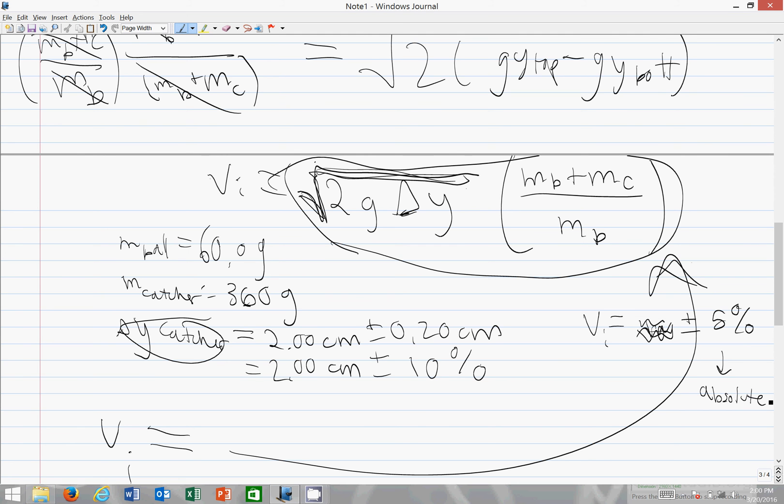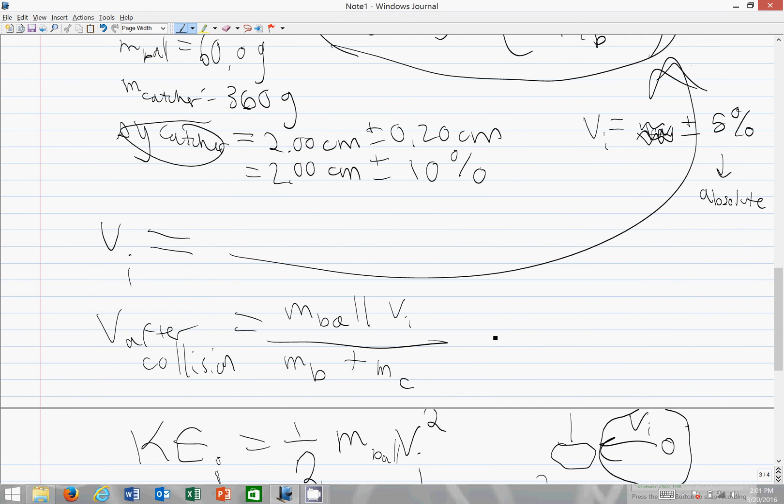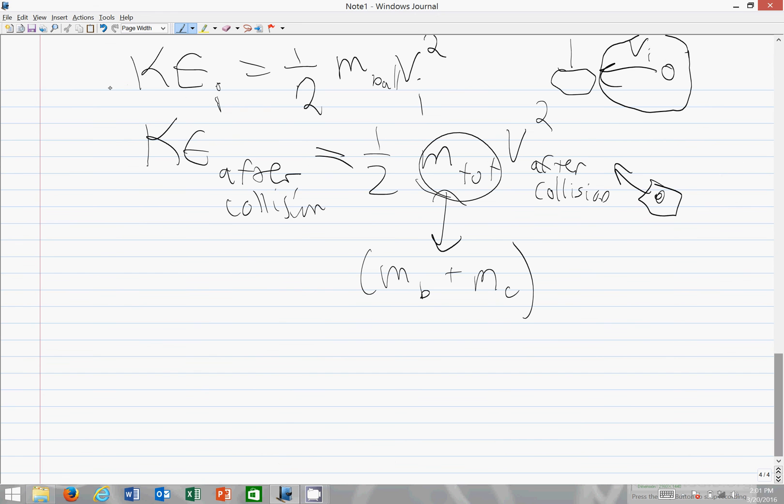The second value v after collision will have an uncertainty of 5% also, because it's just perfect numbers multiplied by v initial. Your KE initial will have a percent uncertainty of 10% because you're squaring v initial. And KE after collision will similarly have a 10% uncertainty because you're squaring v after collision.